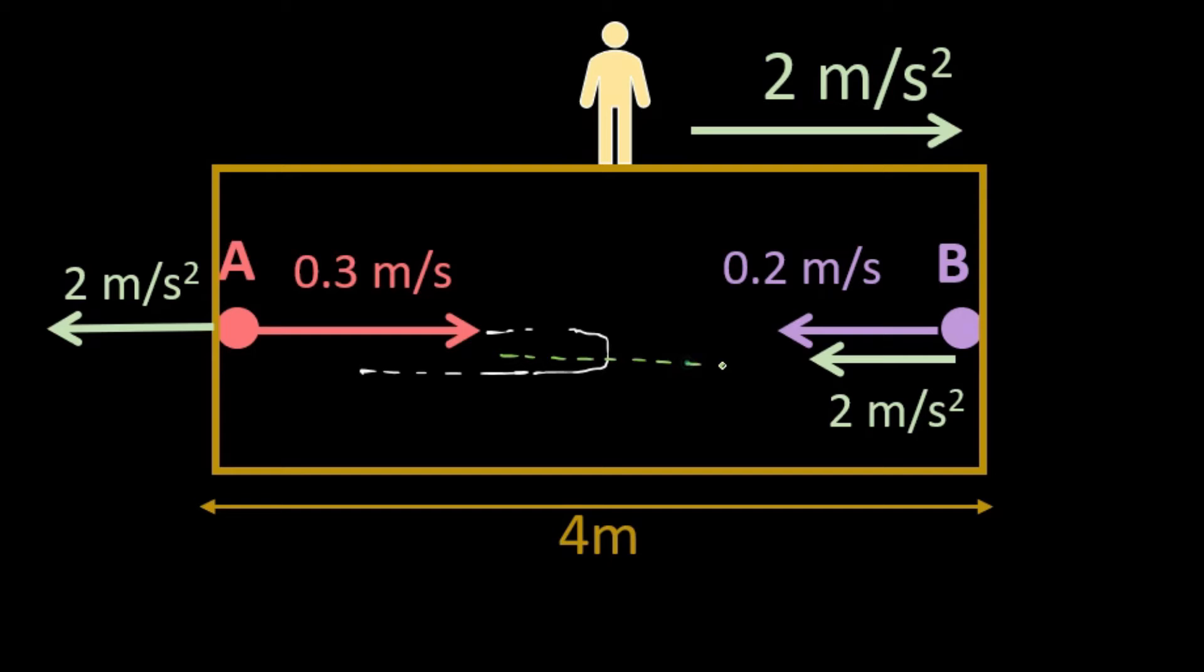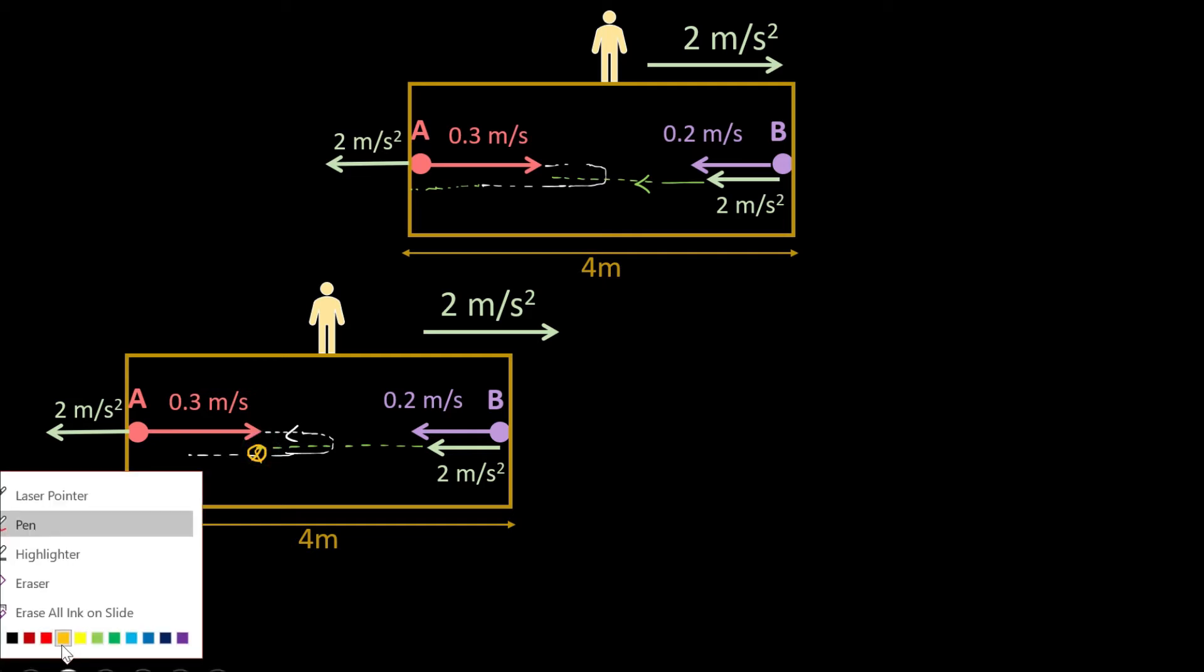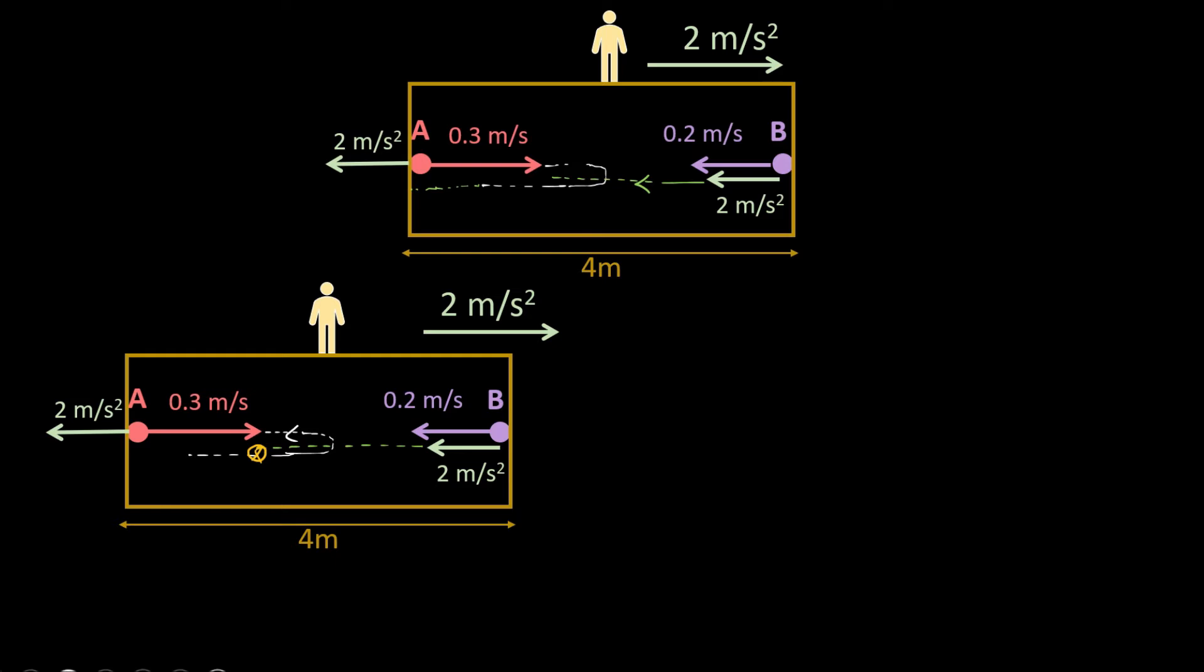Now where will they collide? There can be two possibilities. Let's see possibility one: they collide inside the rocket chamber like this, somewhere here they collide. The time of collision we can calculate straightforward and that is where most students erred.